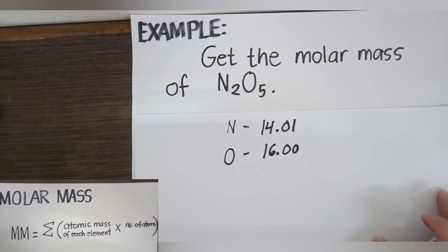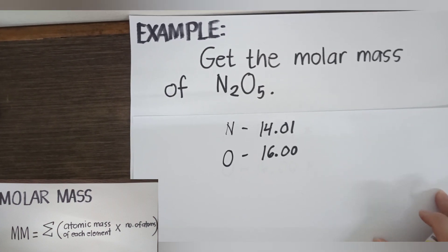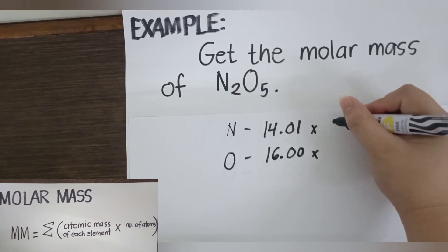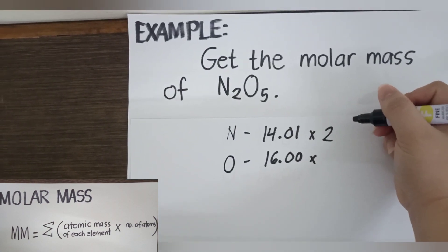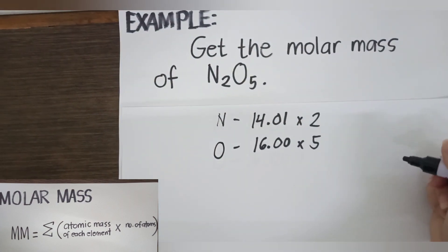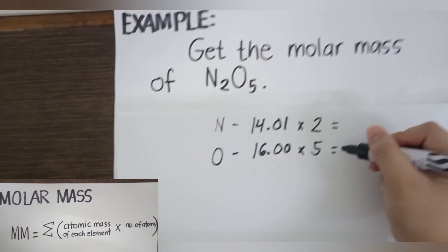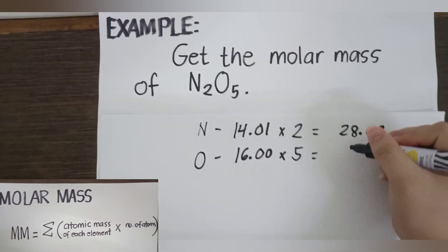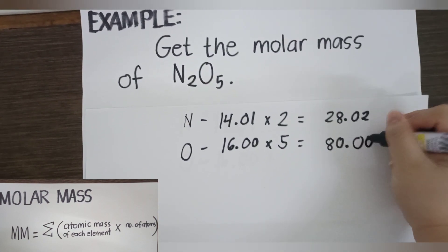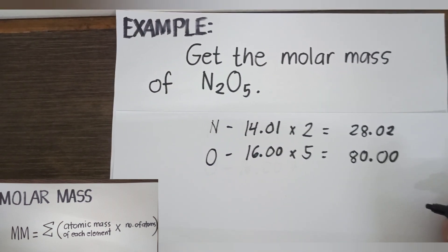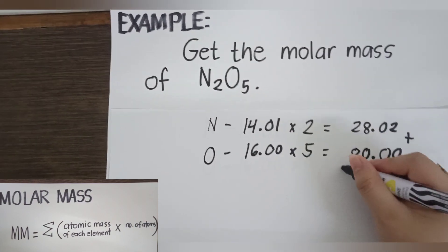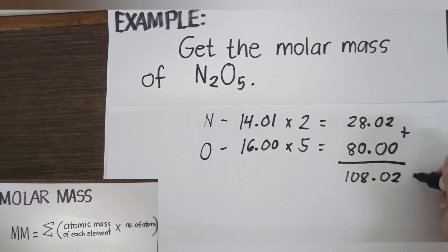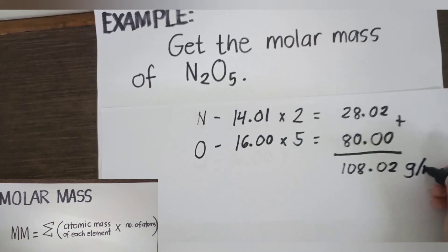Multiply each atomic mass by the number of atoms of that element in N₂O₅. Nitrogen is multiplied by 2 (the subscript), giving 28.02, and oxygen is multiplied by 5, giving 80.00. Then, since we are taking the summation, we add these two values to get the molar mass of 108.02 grams per mole.